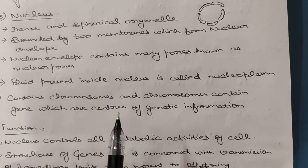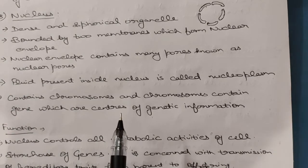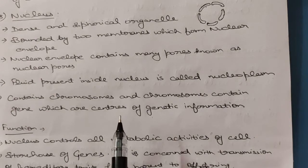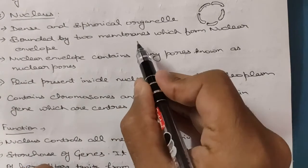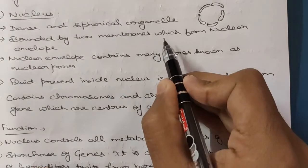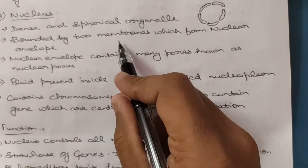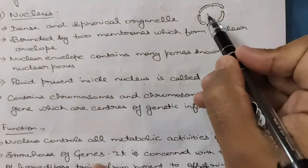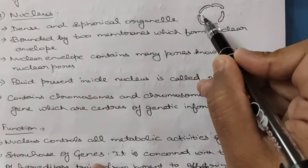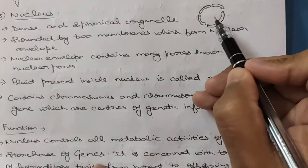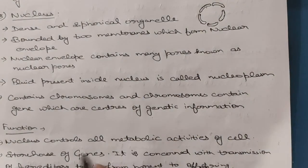DNA stands for deoxyribonucleic acid and RNA stands for ribonucleic acid — these are genetic materials containing genetic information. It is important to remember that the nucleus is a double membranous structure. The nuclear envelope is not continuous, which is why it contains nuclear pores.